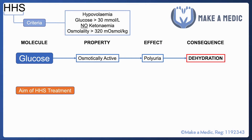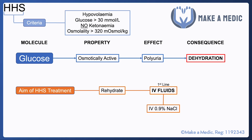Since dehydration is the core issue, the aim of HHS treatment is to rehydrate patients using IV fluids, starting with 0.9% saline. Patients with HHS are often very severely dehydrated, with a fluid deficit of 110 to 220 milliliters per kilogram, and you would want to give the first three to six liters within the first 12 hours.